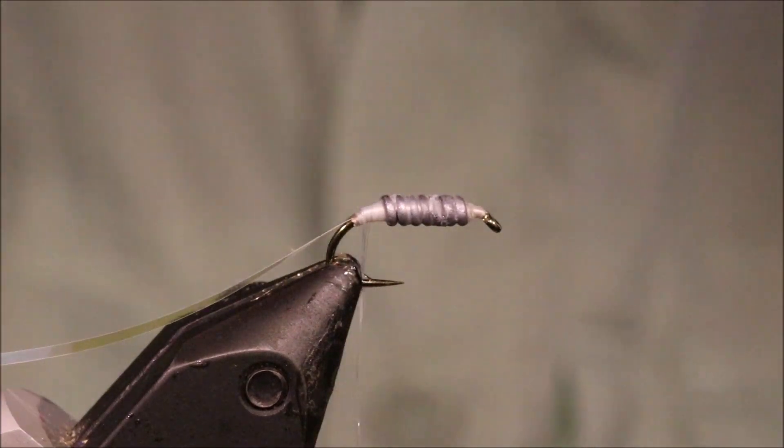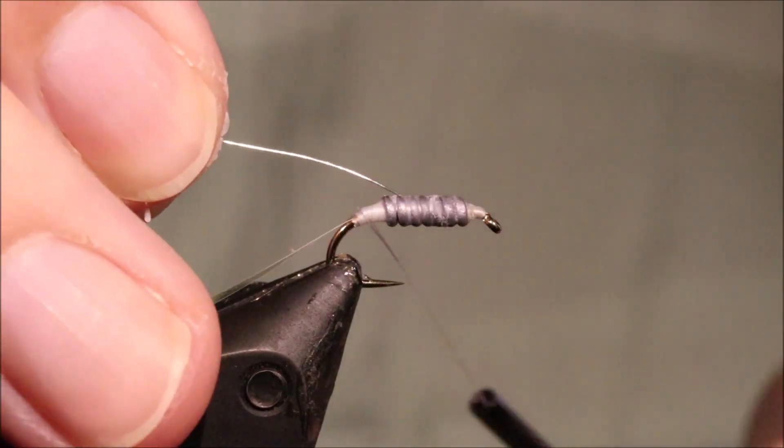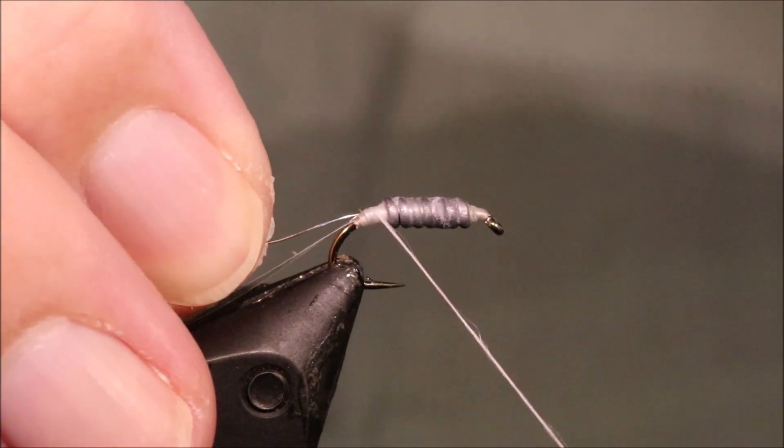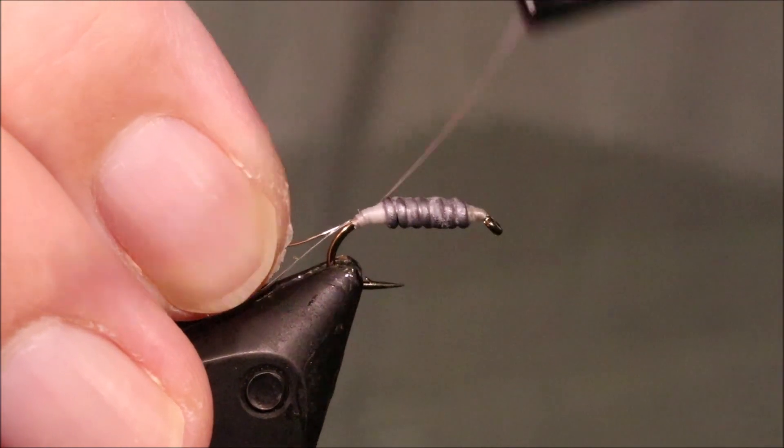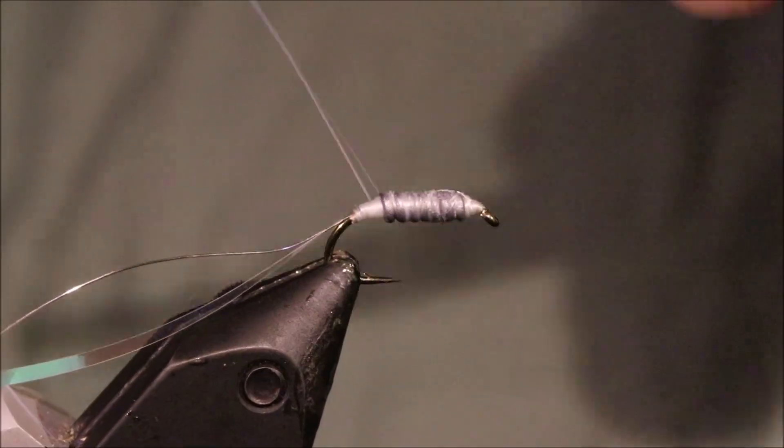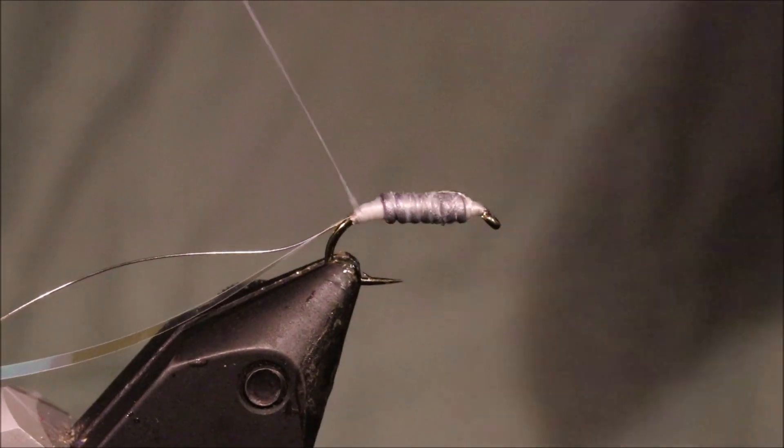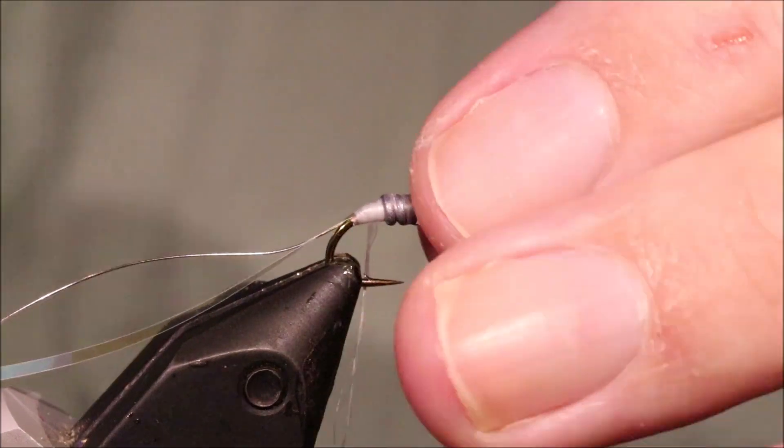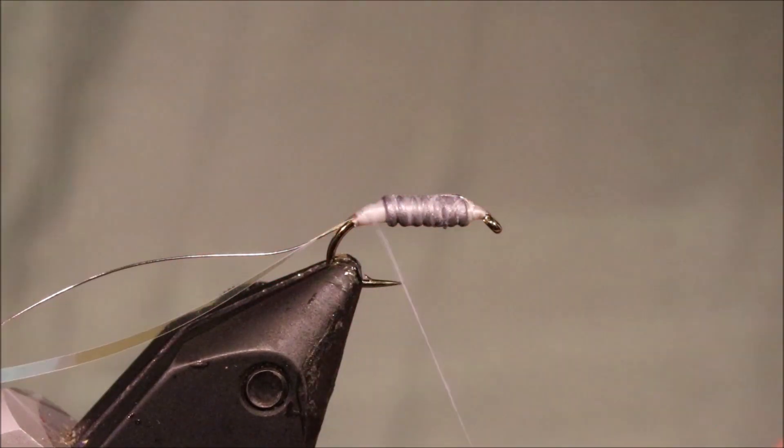Now I put a silver wire rib on it just to protect it, because the body's made of ostrich, which is not that durable. And the mylar breaks relatively easily as well. So just tied that in the length of the body.